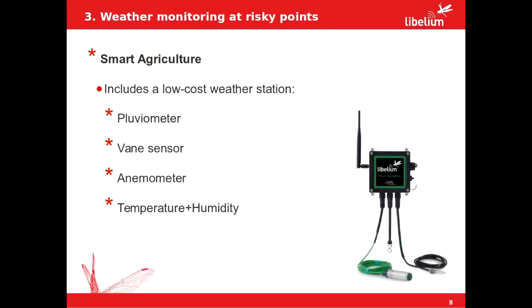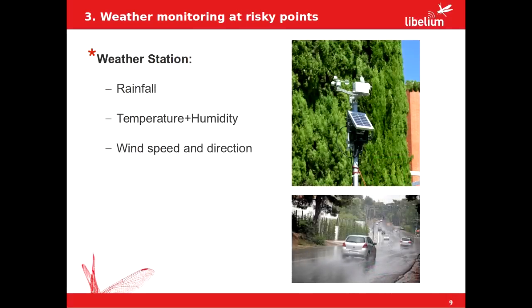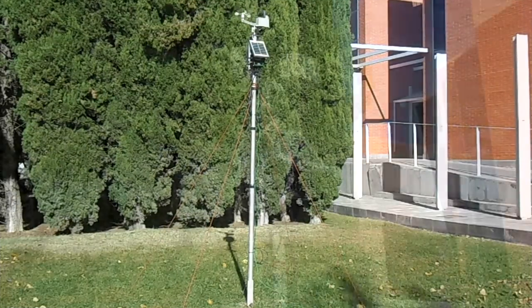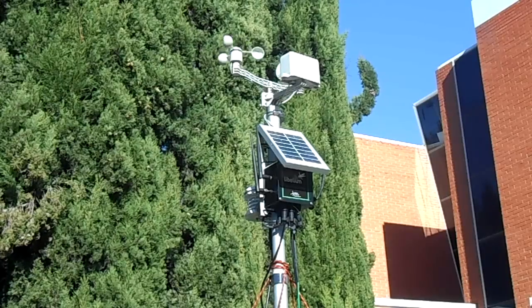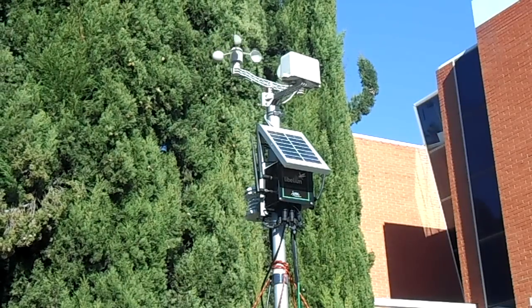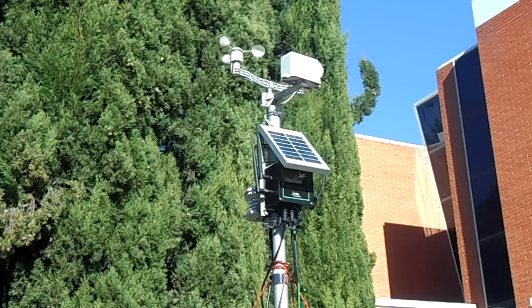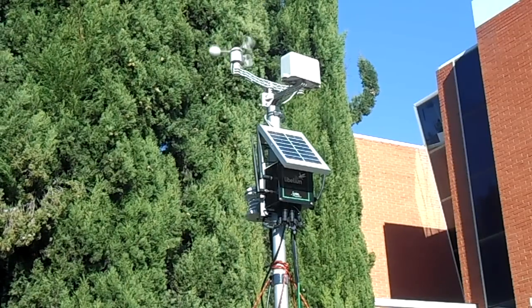Now we go to the third application about weather monitoring at risky points. The smart agriculture line includes a low cost weather station with a pluviometer sensor, vane sensor, anemometer sensor and finally temperature and humidity sensor. This weather station permits to know relevant values like the rainfall, the temperature and humidity, and the wind speed and direction. This allows us to point out the meteorological state of the roads in real time, alerting drivers of such incidents and indicating them to take the necessary precautions.